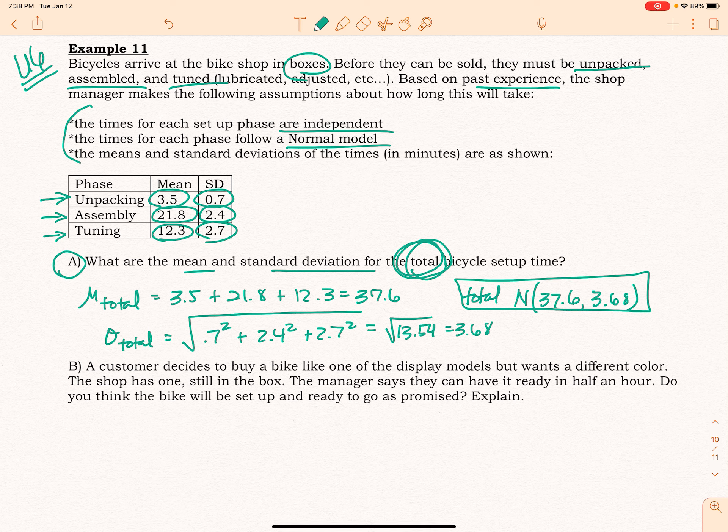In Part B, a customer decides to buy a bike like one of the display models but wants a different color. The shop has one, but it's still in the box. The manager says they can have it ready in half an hour—that's 30 minutes. Do you think the bike will be set up and ready to go as promised?